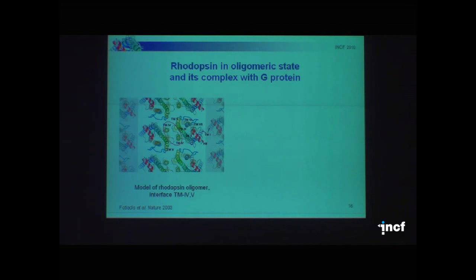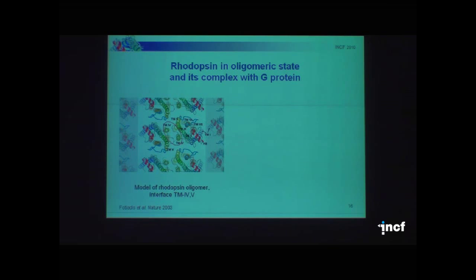It is well known that nearly all GPCRs form oligomers in an oligomeric state. This was first discovered for rhodopsin in 2003, also with Chris Palczewski's laboratory. We built a model of such an oligomeric state of rhodopsin and found that the interface is composed of helices 4 and 5, which was confirmed two years later by biochemical experiments. However, there is a second type of interaction via helix-1 to helix-1, and in crystal structures of newer receptors — adrenergic and adenosine receptors — only this type of interaction is visible.